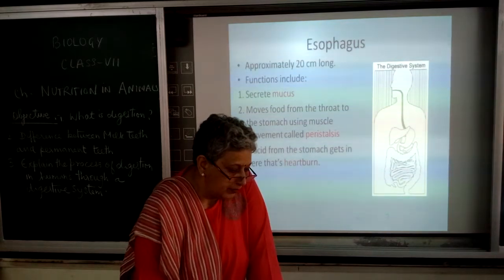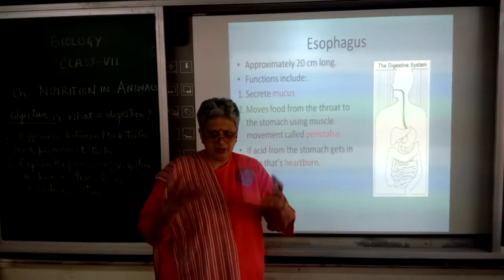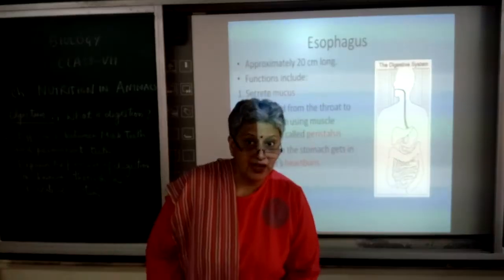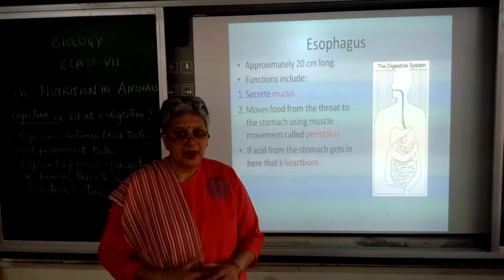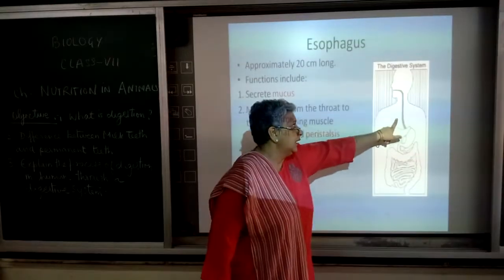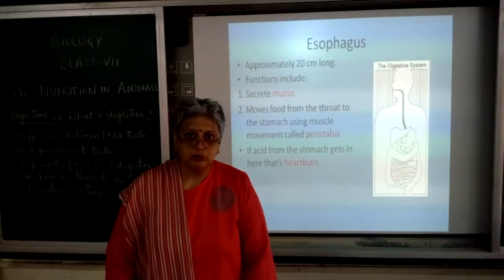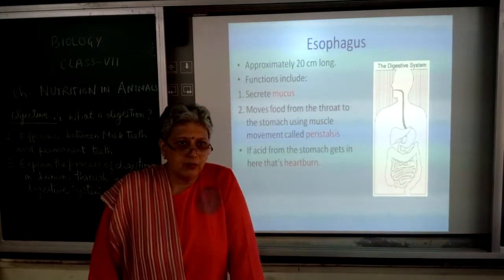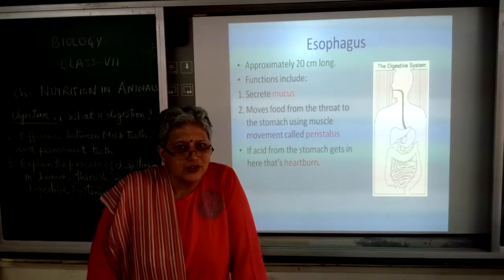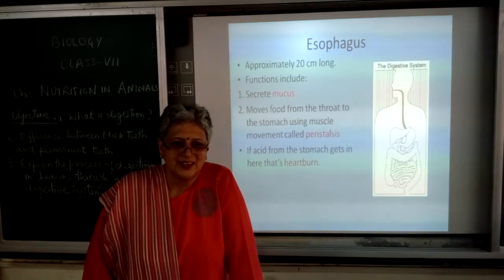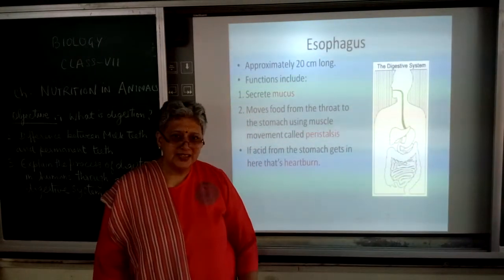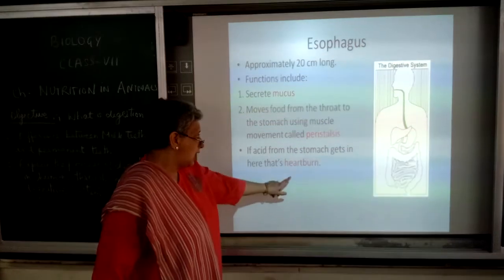If acid from the stomach gets in, that is a heartburn. Sometimes you eat in a hurry, or you are tensed and keep eating, or the food is very tasty so you overeat. As a result the acid content increases and food comes back out through the esophagus through the mouth - that is called vomiting. The acid present in the stomach is hydrochloric acid (HCl) - the same acid found in very small amounts in toilet cleaners. If the quantity increases, it results in heartburn or acidity.